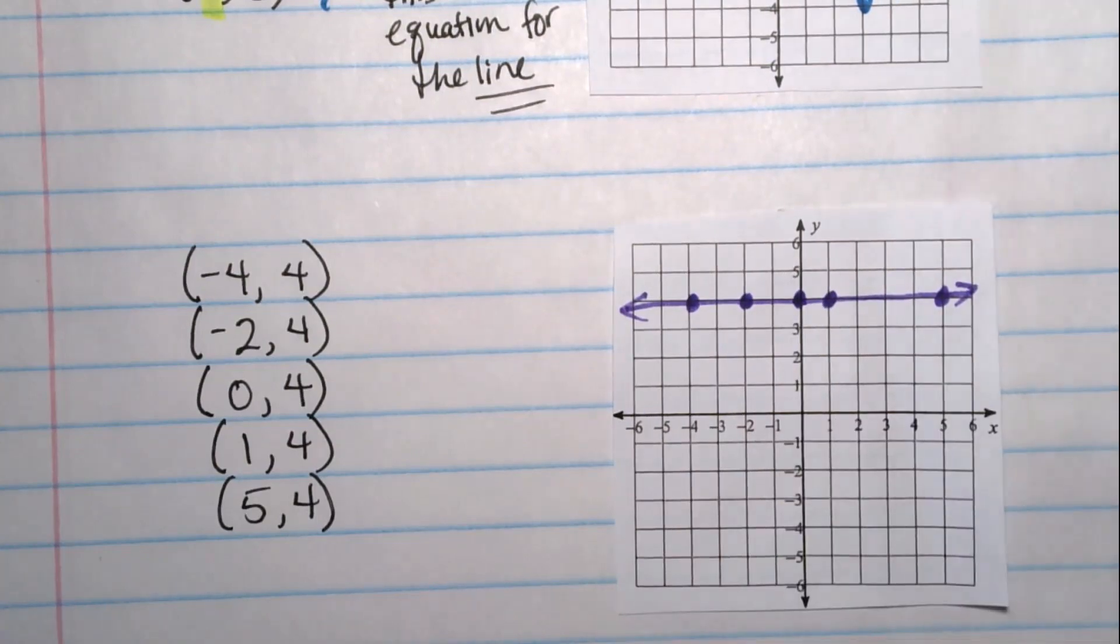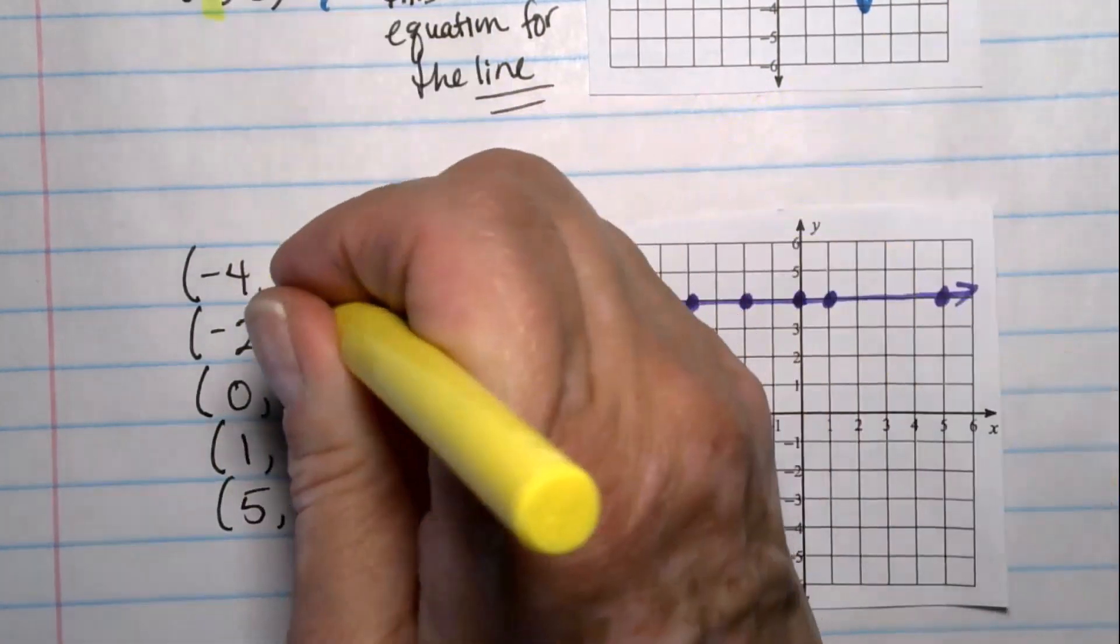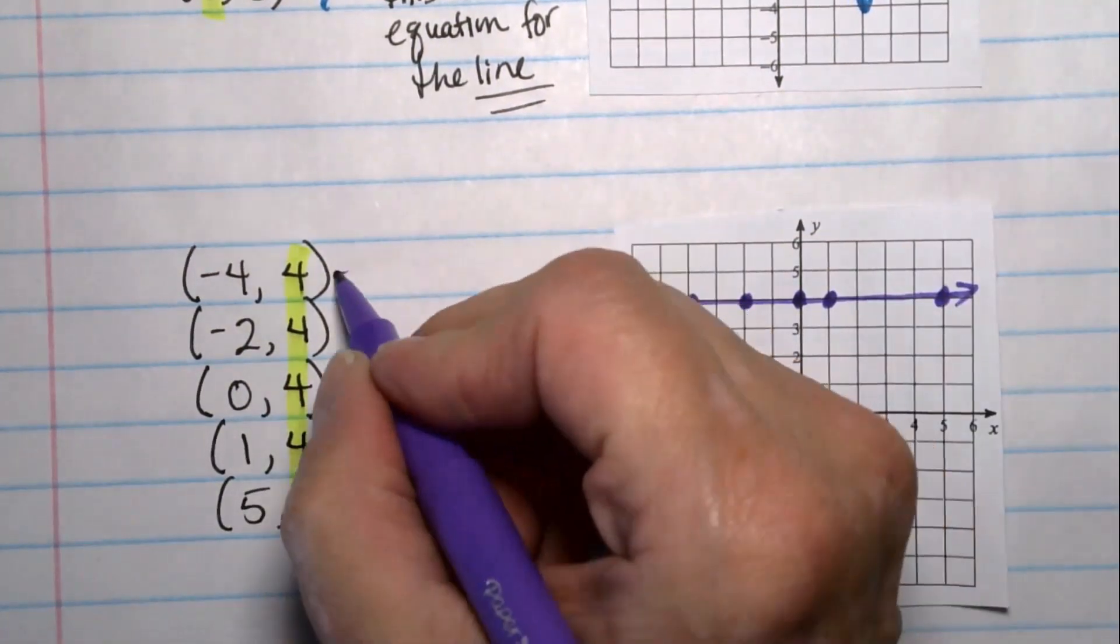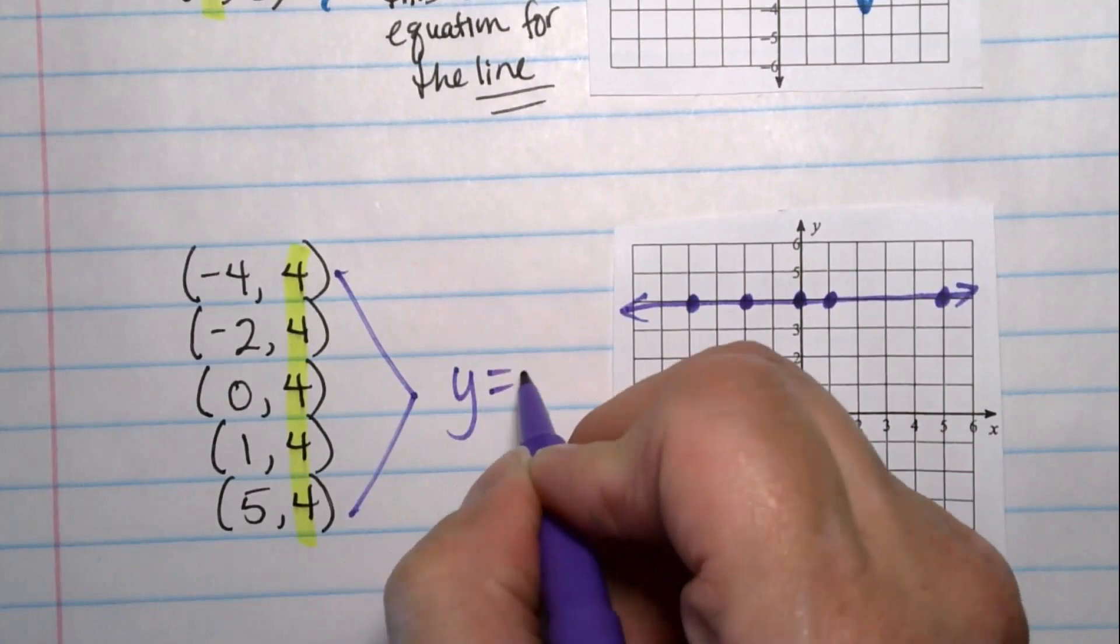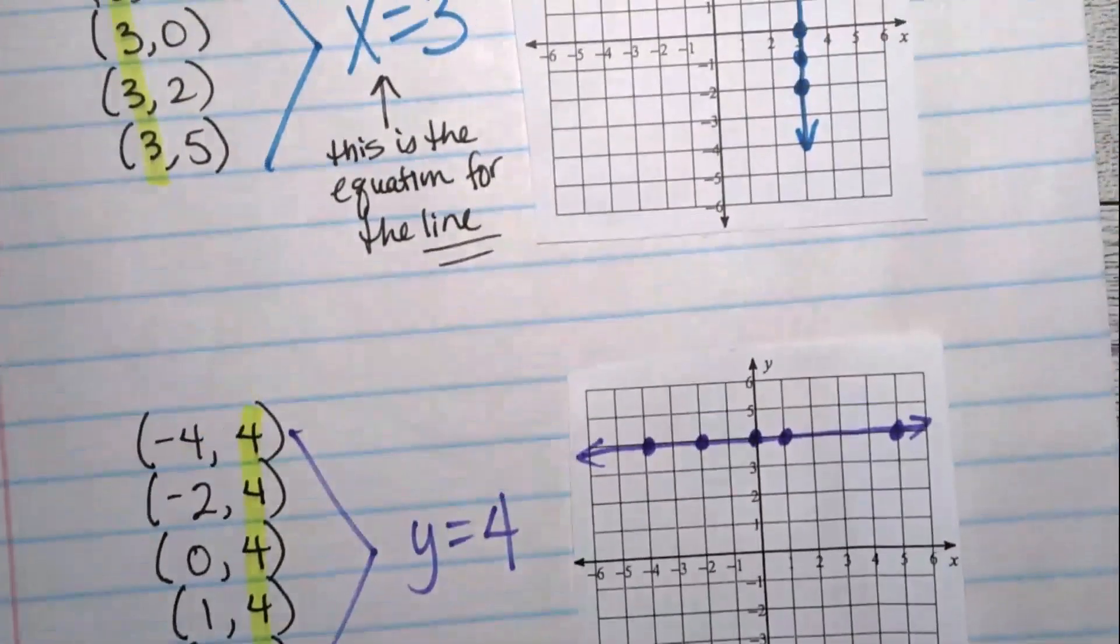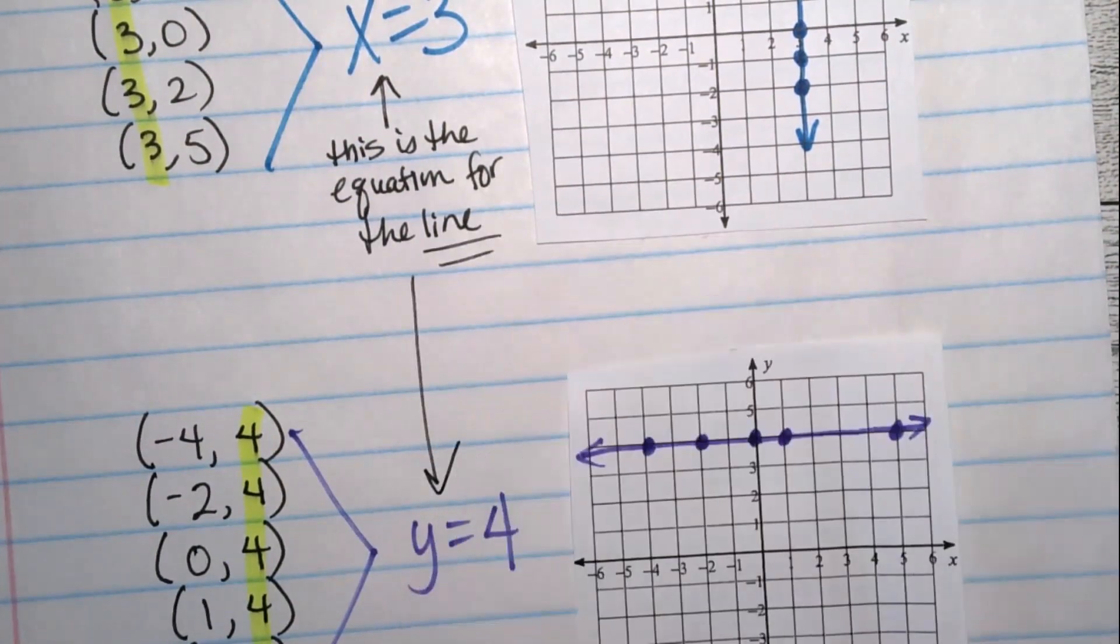And then when you look at the points, you can see that all the y's equal 4. So if I just write down what I'm looking at, y equals 4. This is the equation for the line. y equals 4.